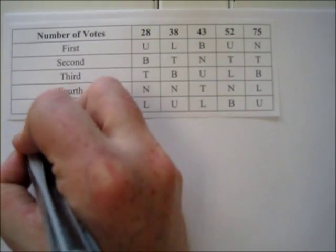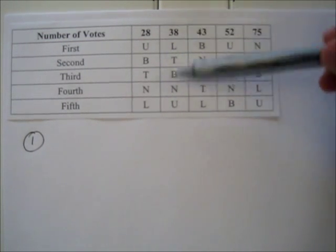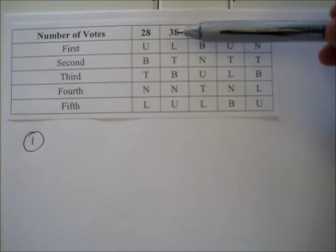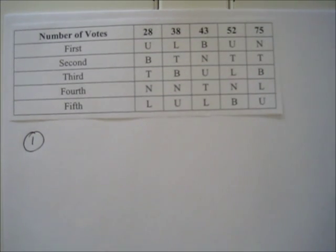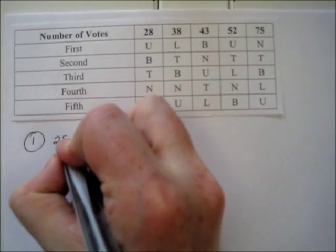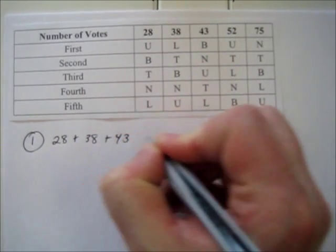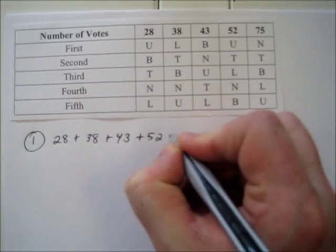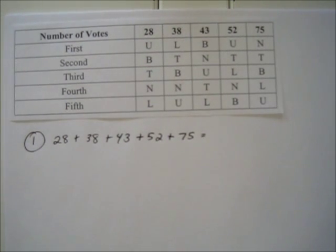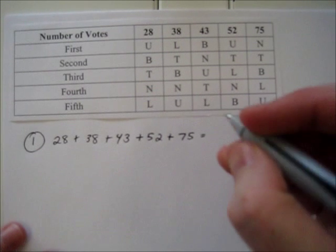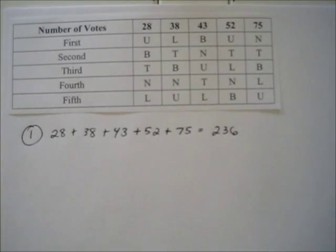The first question is simply how many alumni voted. Since each one of these columns represents a certain number of alumni who voted in that order, if we want the total number of votes we simply add up the numbers at the top of each column, which comes out to 236 total votes.